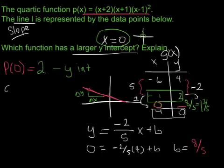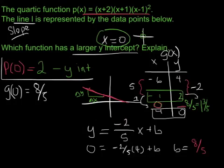When I plug in 0 here, I'm going to get 8/5 as my y-intercept. And so the one which has a larger y-intercept is going to be p(x).